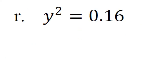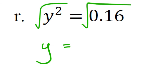Take 15 seconds to type the square root of 0.16 into the calculator. This should come out clean because 16 is a perfect square. The calculator gives 0.4, and indeed 0.4×0.4=0.16. So y=0.4.